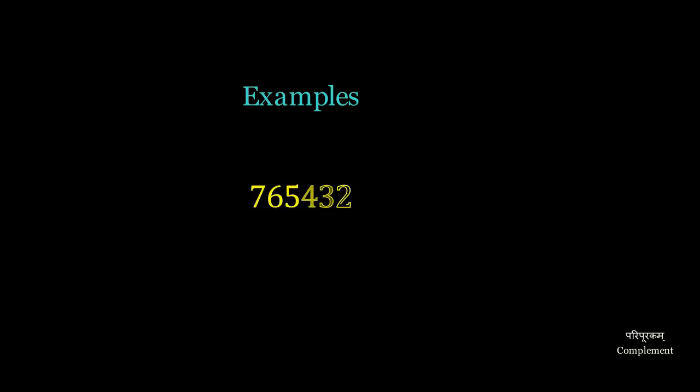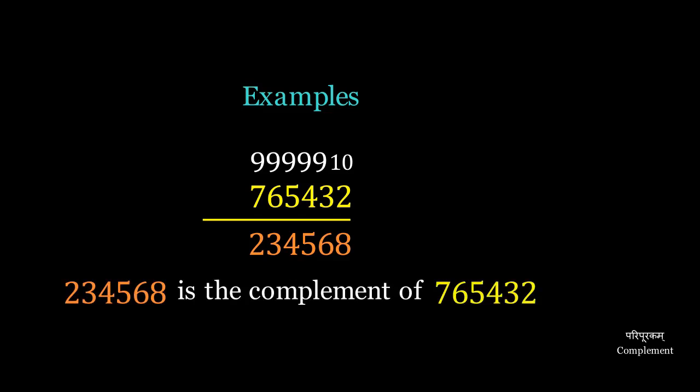A larger number, such as 765,432, is just longer to do, but you can still do it mentally. 9 minus 7 is 2, 9 minus 6 is 3, 9 minus 5 is 4, 9 minus 4 is 5, 9 minus 3 is 6, 10 minus 2 is 8, giving us 234,568 as the complement.